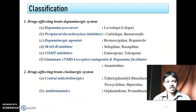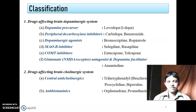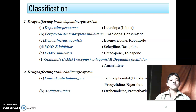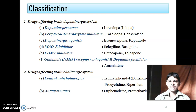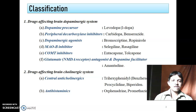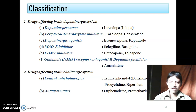These are the different classifications of drugs. Drugs affecting the dopaminergic system include: dopamine precursor levodopa, peripheral decarboxylase inhibitor carbidopa, dopaminergic agonist bromocriptine, MAO-B inhibitor selegiline, COMT inhibitor entacapone, and NMDA glutamate-type antagonist or dopamine facilitator amantadine. Drugs affecting the cholinergic system include central anticholinergic drugs like trihexyphenidyl and antihistaminic drugs like promethazine.